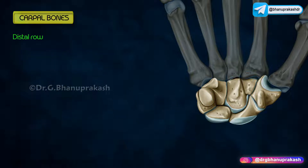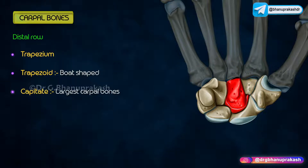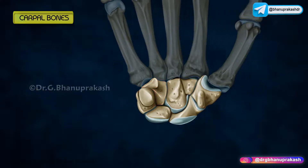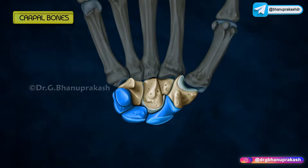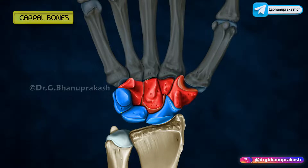The distal row consists of: trapezium; trapezoid, which is boat-shaped; capitate, which is the largest of the carpal bones; and hamate, which is wedge-shaped with a hook. The proximal row of bones present a proximal convexity for the articulation with the lower end of the radius.